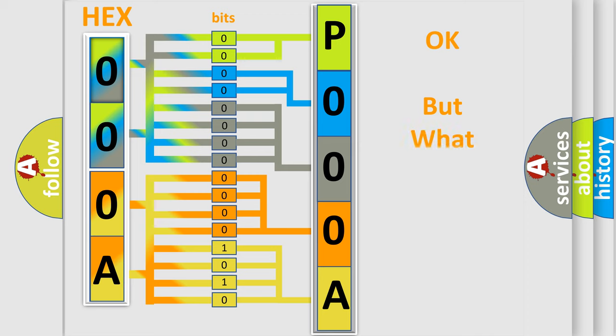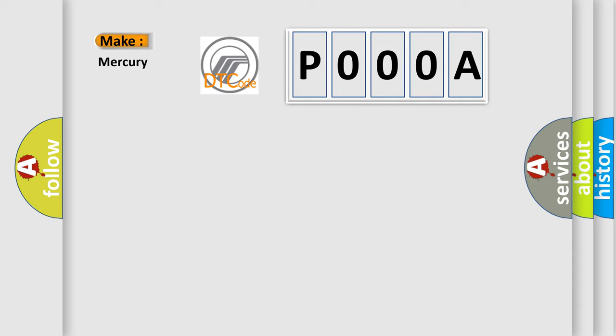The number itself does not make sense to us if we cannot assign information about what it actually expresses. So, what does the diagnostic trouble code P000A interpret specifically for Mercury car manufacturers?